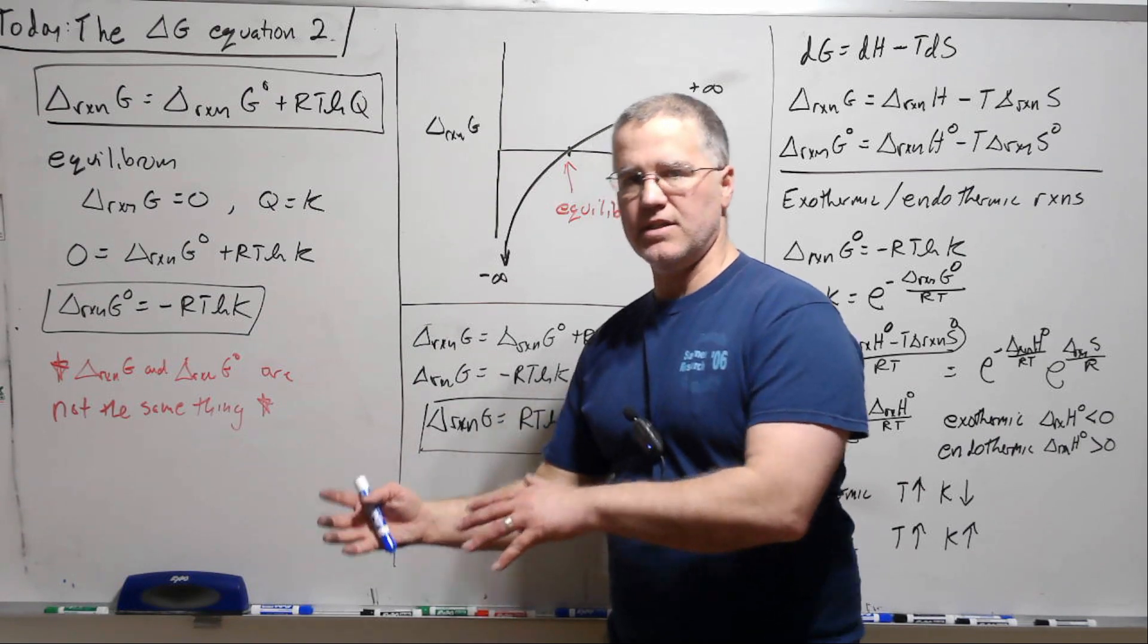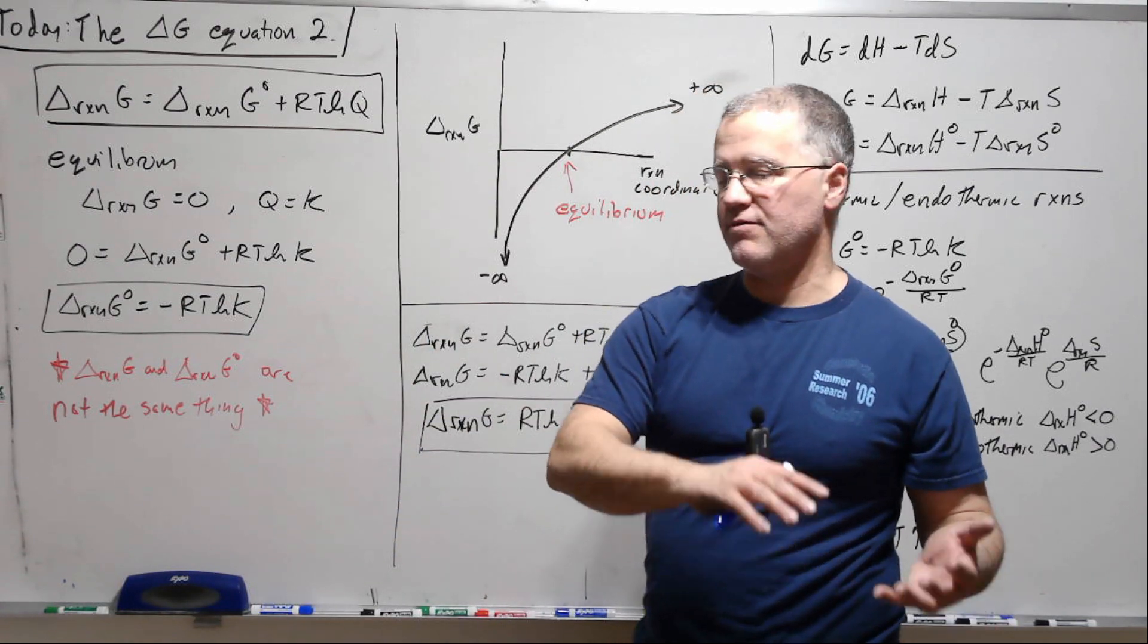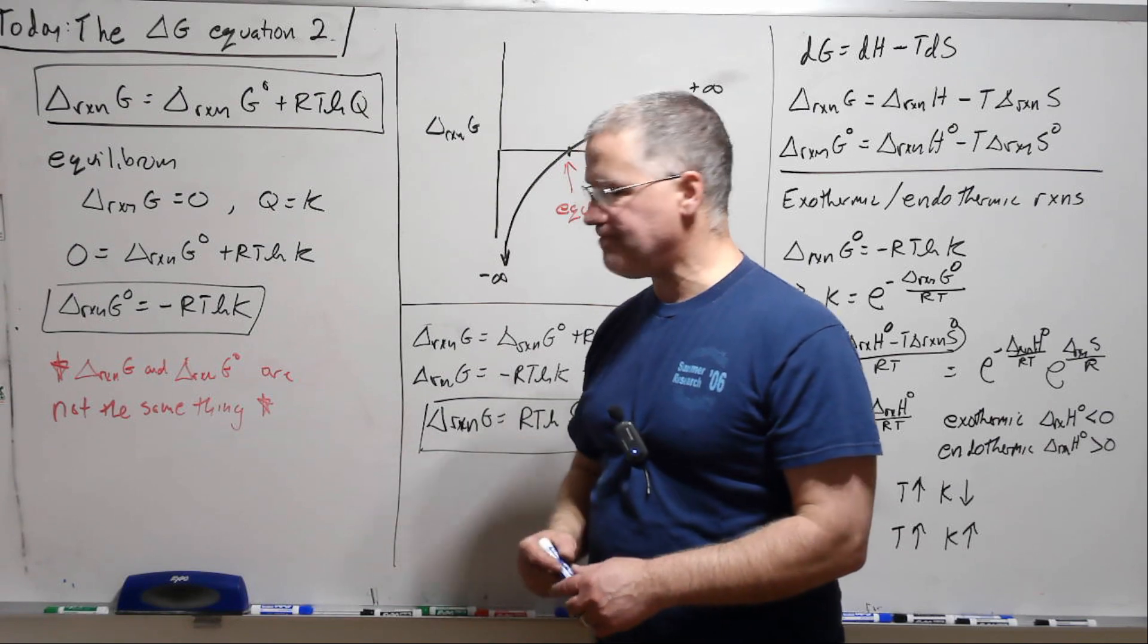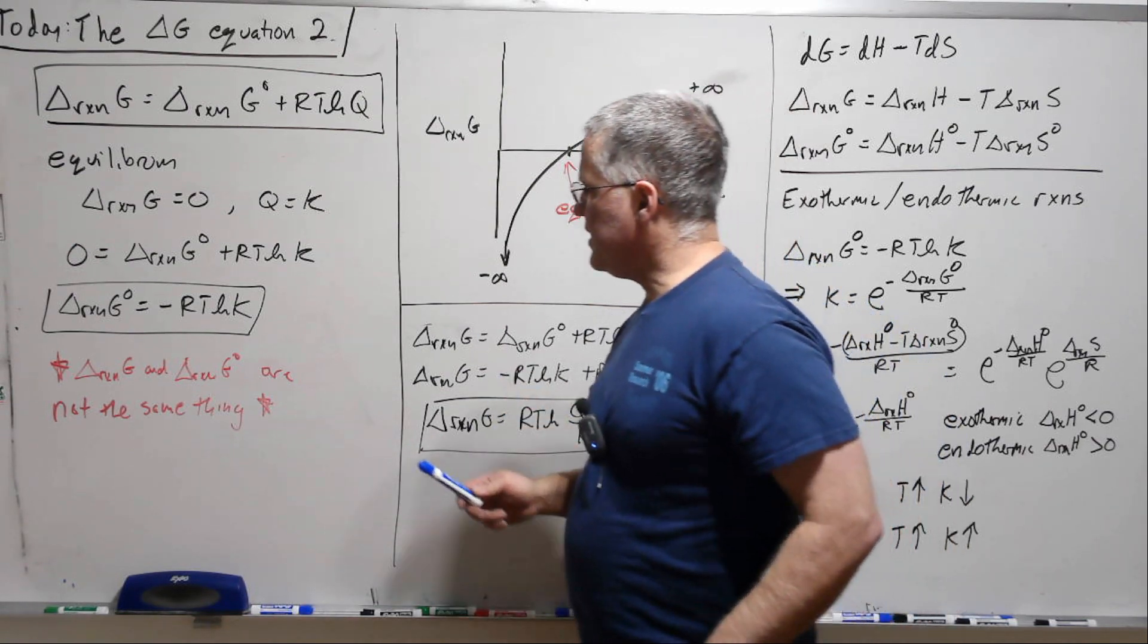So if we know the equilibrium constant, we can get the standard Delta G. If we know the standard Delta G, we can get the equilibrium constant. Alright, now a couple of things.